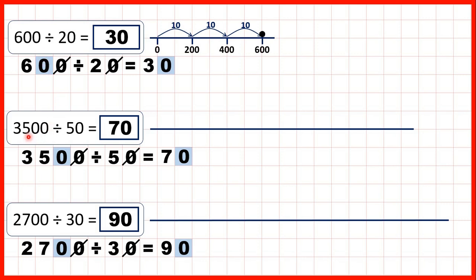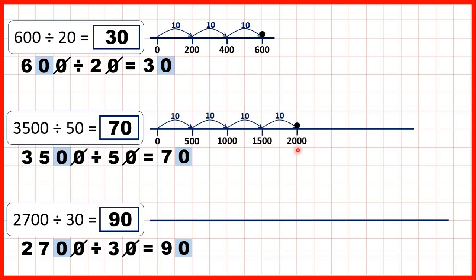Now we have 3,500 divided by 50. Instead of counting in steps of 50, we count in steps of 10 times 50, so in steps of 500: 500, 1,000, 1,500, 2,000, 2,500, 3,000, and then 3,500. We counted 10 lots of 50 seven times, so that's why our answer is 70.